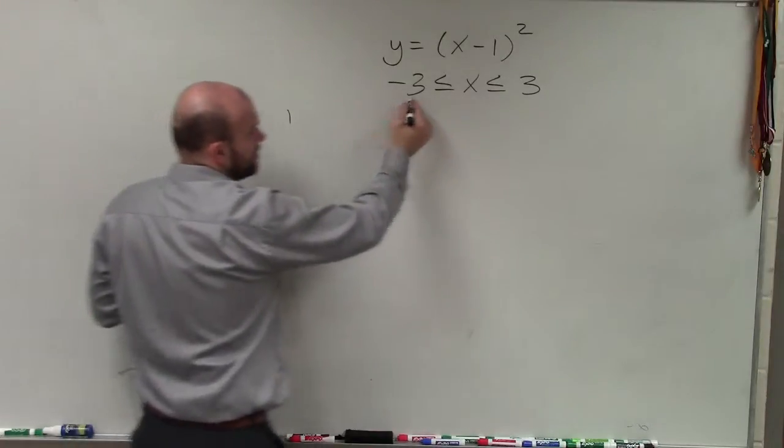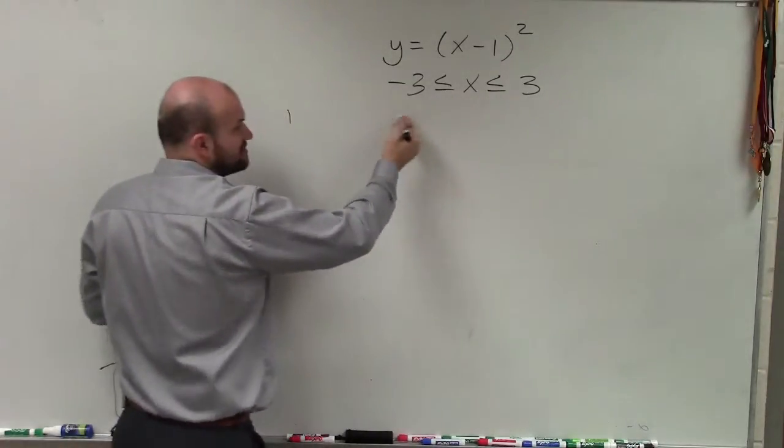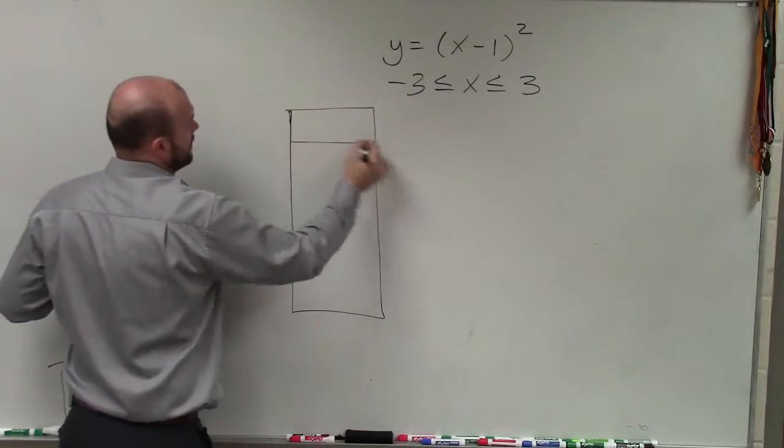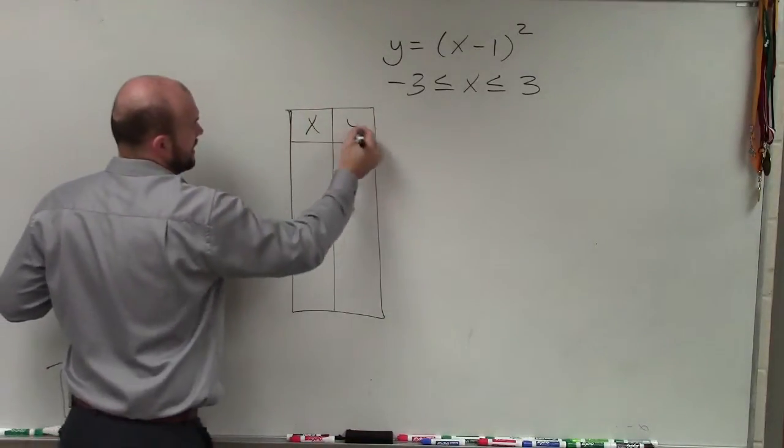All you're going to do is I want the table of values, I want the x values between negative 3 and 3. So by using a table here, I have x and I have y.